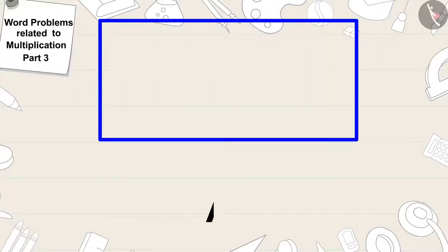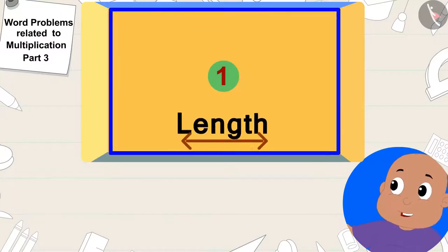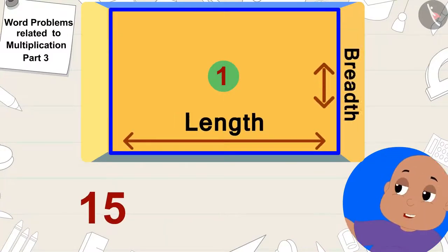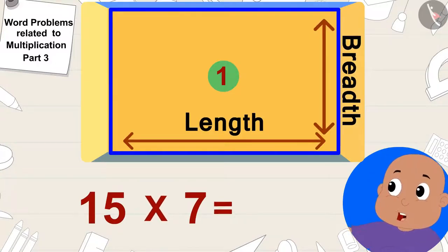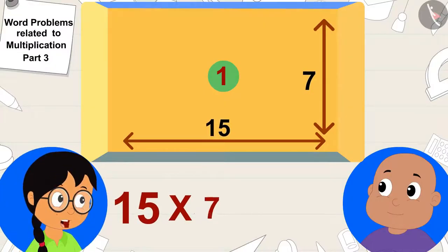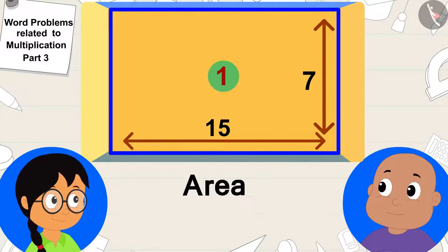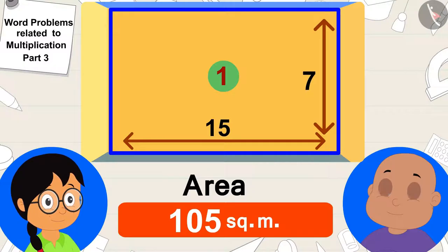To find the area of any rectangle, we multiply its length by breadth. The length of this wall is 15 meters and breadth is 7 meters. Meenu, you are an expert in multiplication. Quickly tell me how much is the area of this wall? Bablu asked Meenu. 15 times 7 will be 105 square meters. The area of this wall is 105 square meters. Meenu quickly multiplied and said to Bablu.